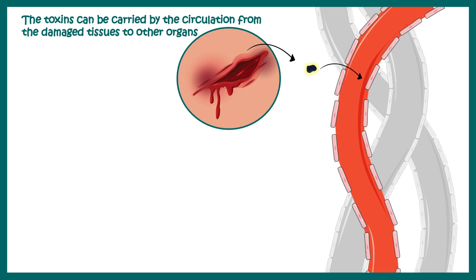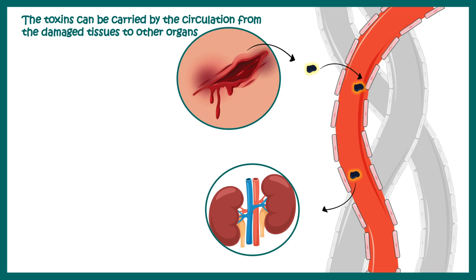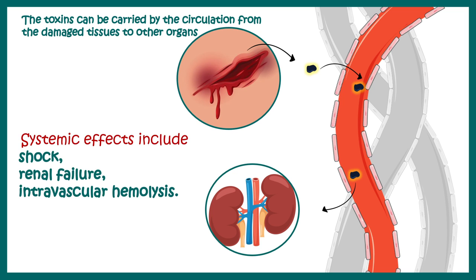These toxins can travel to the kidney, causing renal problems. They can also cause shock, renal failure, intravascular hemolysis, and many other symptoms. In short, if the toxin spreads over the body it may have several systemic effects.